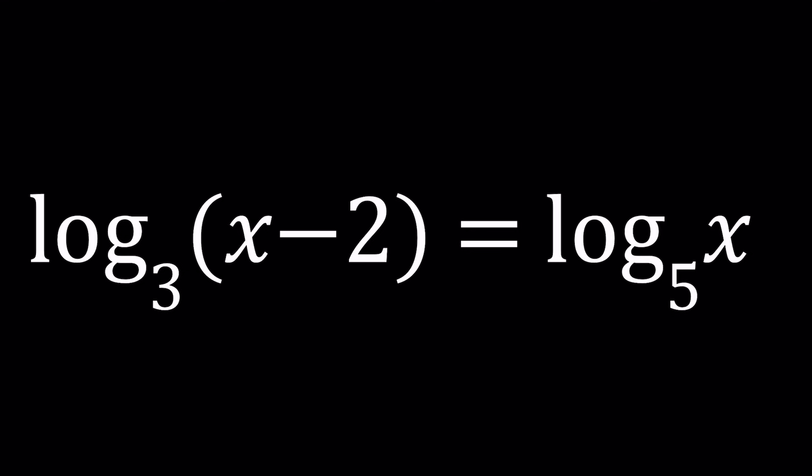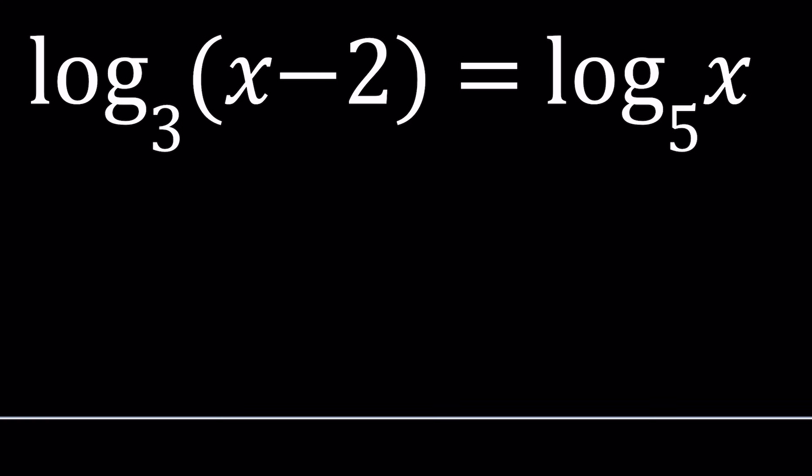This is a logarithmic equation, but the challenge is the bases are different. Because if the bases were the same, this equation would be easy to solve. For example, if we had log₃(x+2) = log₃(3x), you could just ignore the logs and conclude x+2 equals 3x.